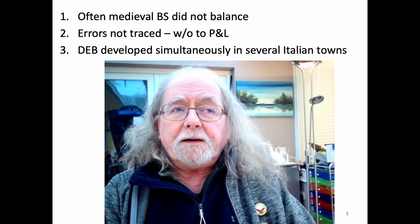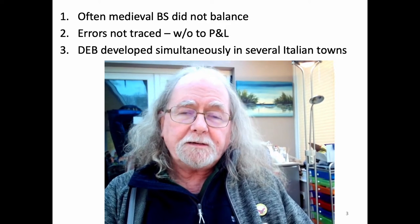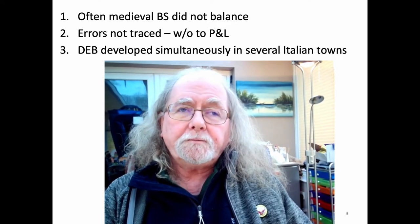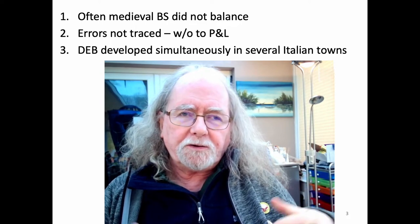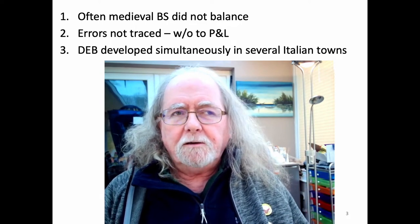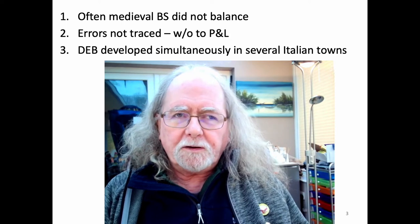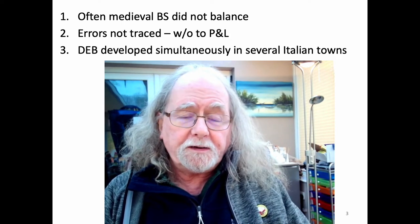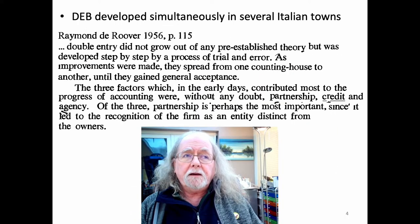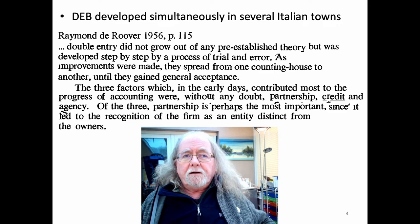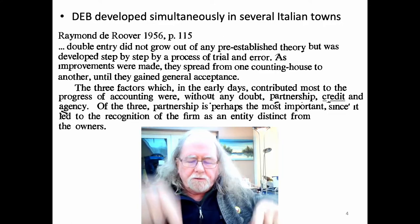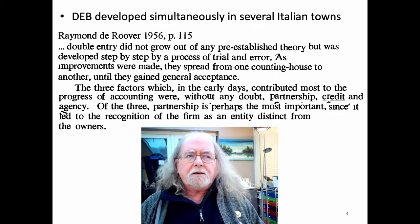On the third point — that double-entry bookkeeping developed simultaneously in several Italian towns — you can see evidence because double entry appears in all the major trading centres in Northern Italy. De Roover says it did not grow out of pre-established theories, meaning no one planned it out and then implemented it. None of that happened.